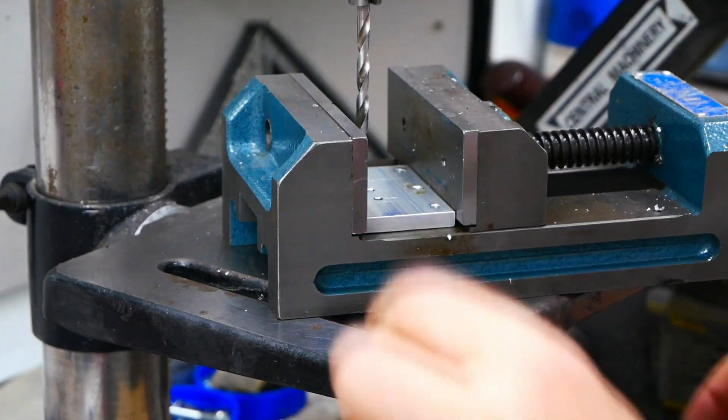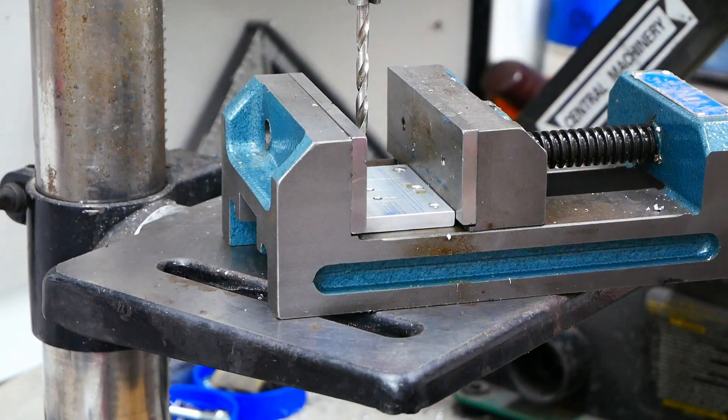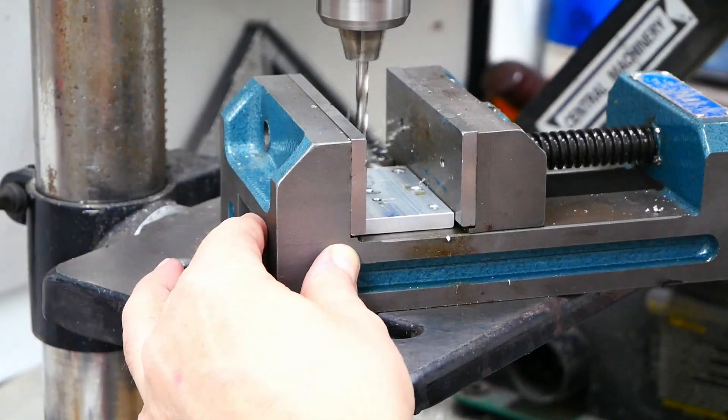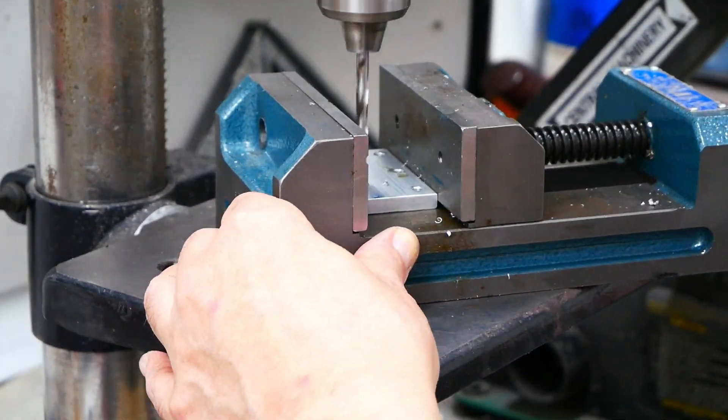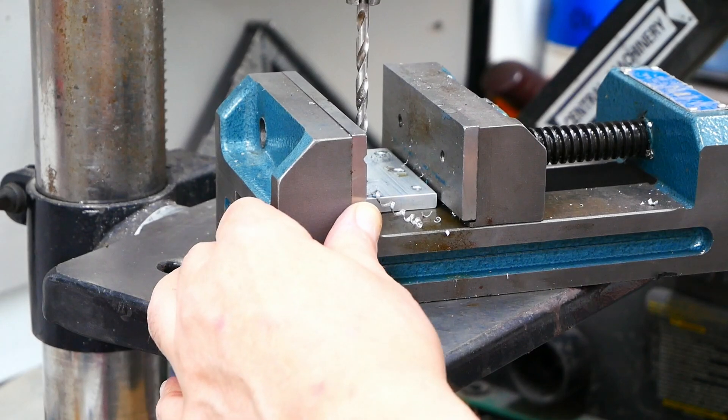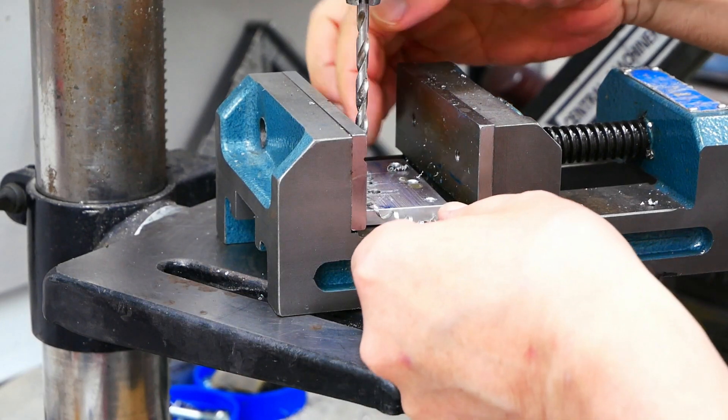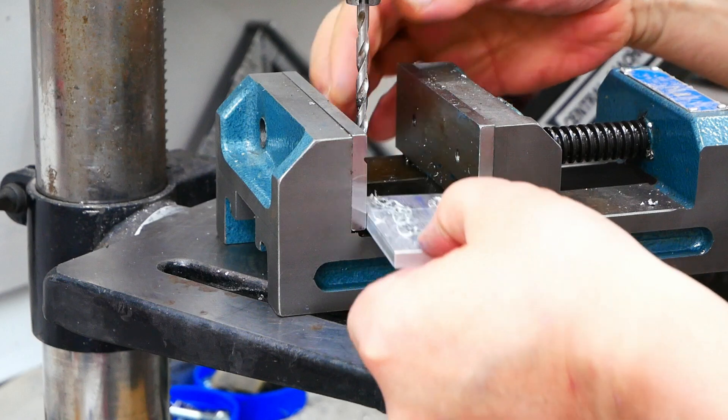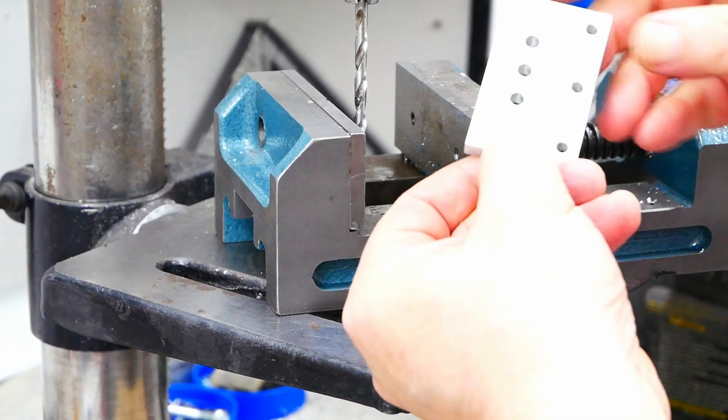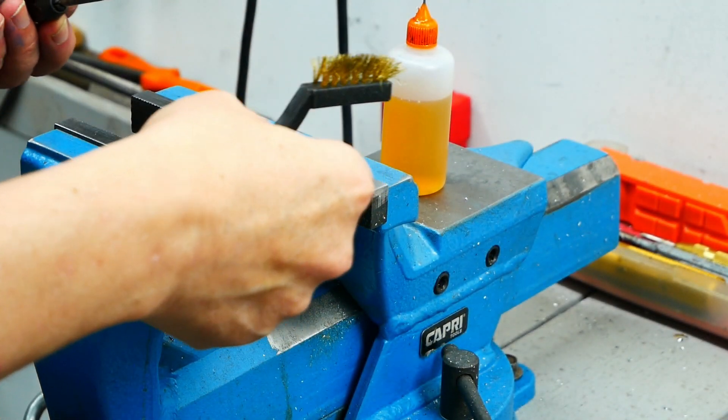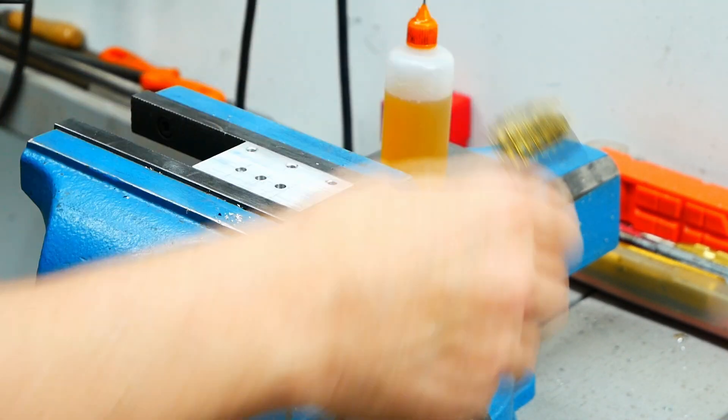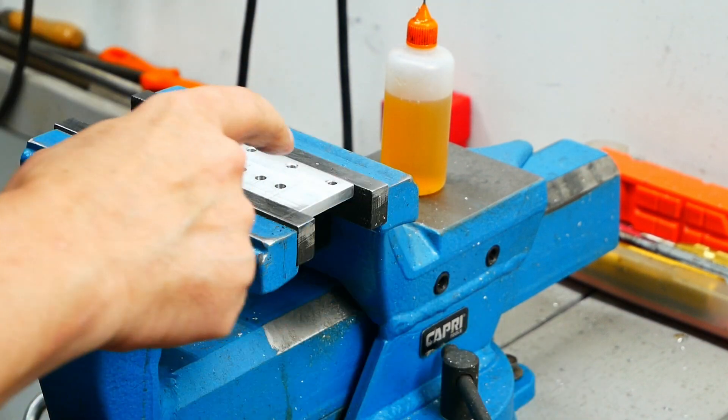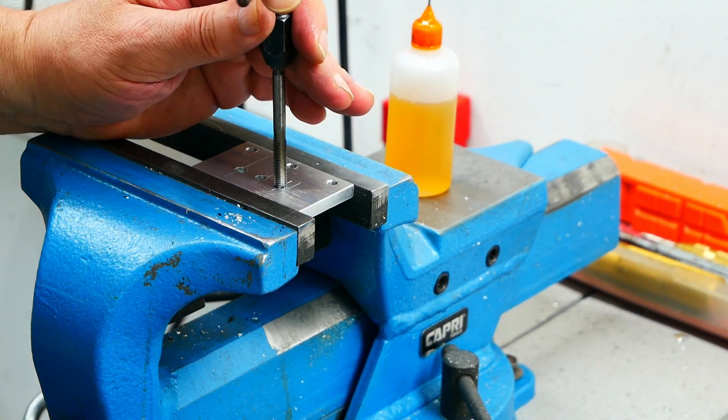On the drill press here, I'm just going to drill those holes out to M5. All righty. And let's tap them on the vise. I got it in the vise. Got my little brush here. Cutting fluid. Let's do those three holes here. Tap them.